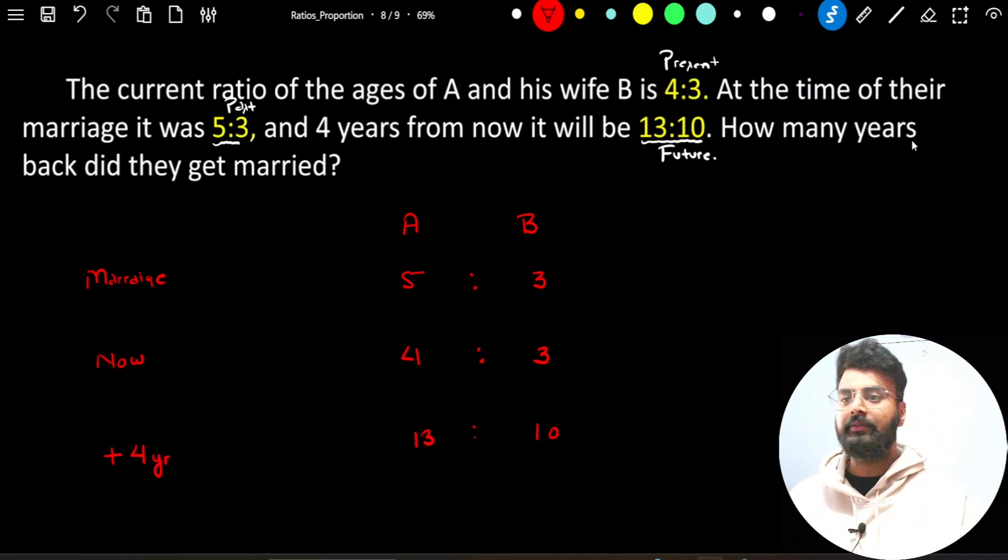Now the next important thing which we have to check before we do anything: we have to check whether the differences between the ages of A and B at any given instance are same or not. I will simply assume these numbers of ratios as the ages of A and B at these 3 different instances. Here the difference is 2, here 4 and 3 difference is 1, 13 and 10 difference is 3.